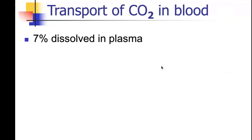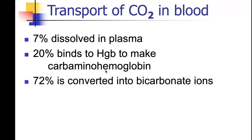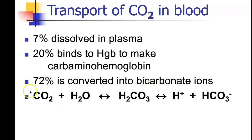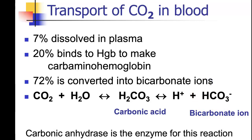Let's think about CO2 transport. About seven percent is dissolved in plasma, 20 percent binds to hemoglobin to make carbaminohemoglobin, and 72 percent is converted into bicarbonate ions — and that's going to be the focus of our next lecture. We talk about the buffering system in the blood — the bicarbonate buffering system. CO2 and water form carbonic acid, which then dissociates into hydrogen ion and bicarbonate. This is the buffer in our blood. The enzyme for this reaction is called carbonic anhydrase.